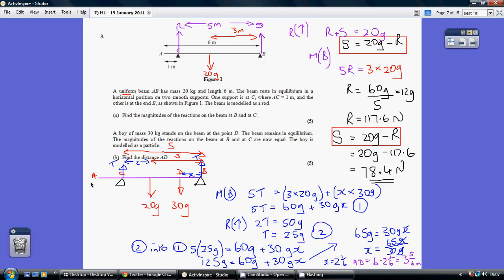Now, for part B, just make sure that you've got the diagram looking like this. So taking moments about B, we've got 5T again in the clockwise direction. And in the anti-clockwise direction, we've got 3 times 20G and this unknown distance here between D and B, which I'm calling X, times 30G. So that gives me my first equation.